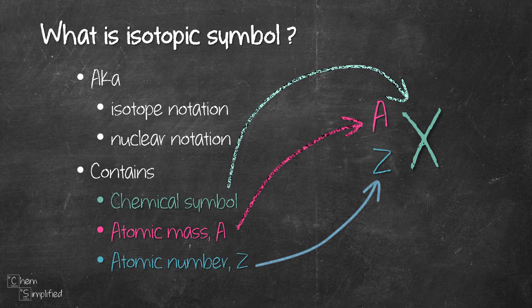Atomic mass is the larger number that's in decimal place, and atomic number is the smaller whole number. This information you can find in the periodic table.